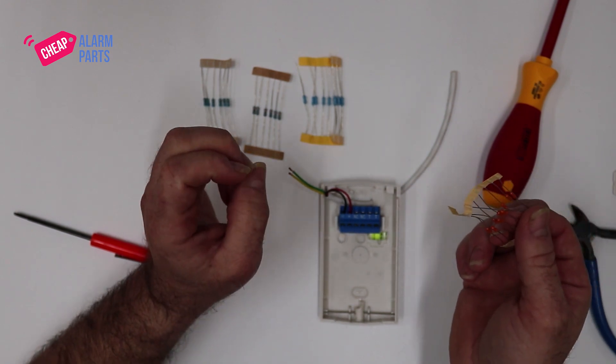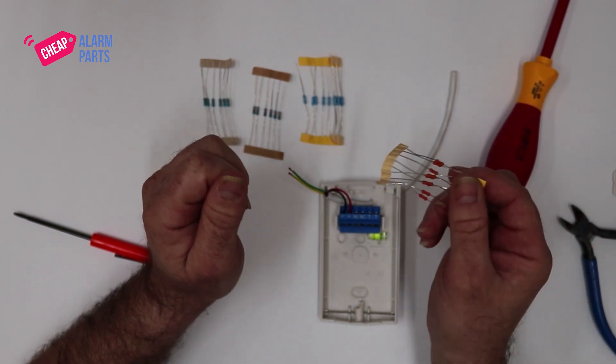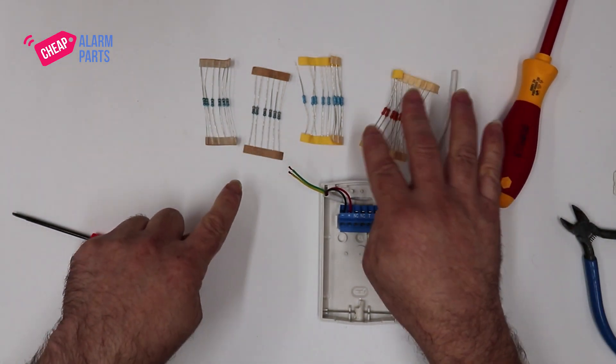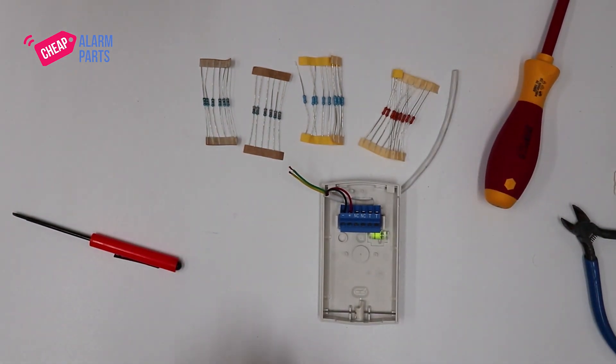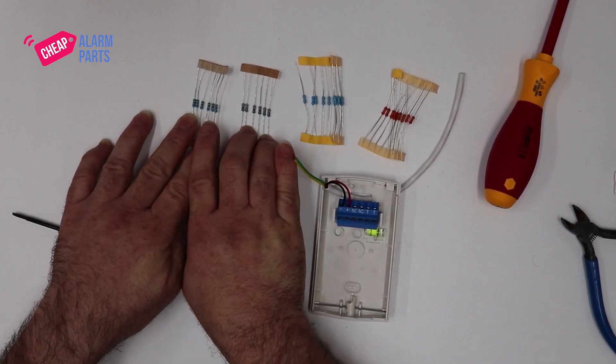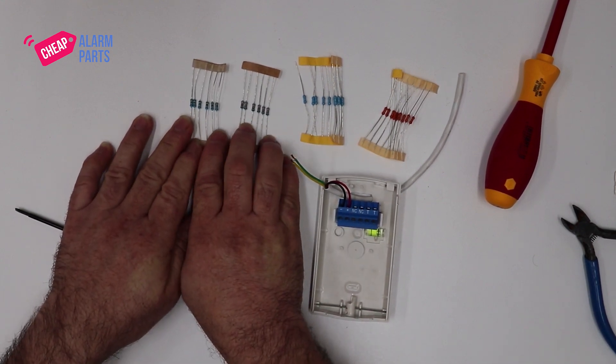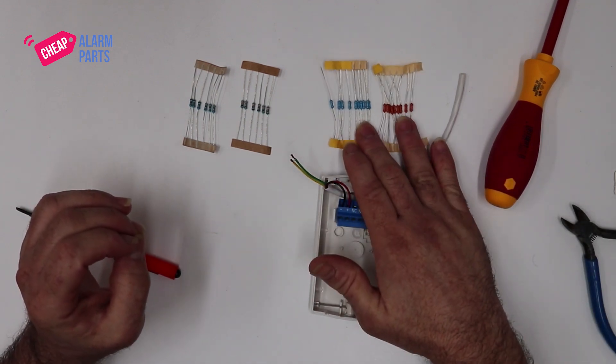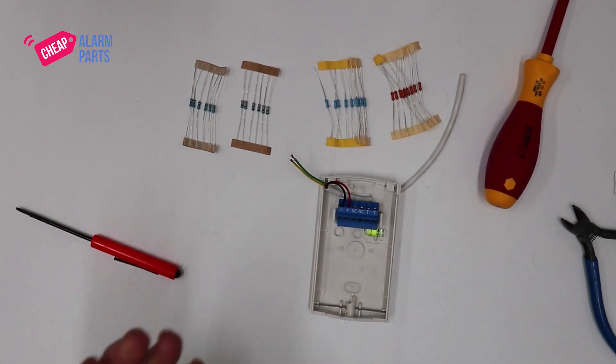Obviously, if you're not using a Bosch panel and you're using a different maker's panel, you might need different resistors inside your detector. These are the resistor packs that come with all the Bosch panels. The 2000 and 3000 series use this type of resistor, and the 6000 series looks like this type of resistor.